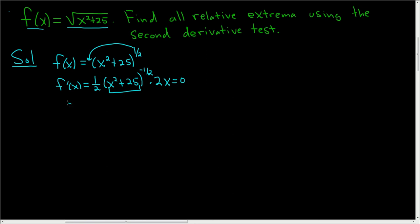This can be rewritten as follows. f prime of x is equal to, the twos cancel, the x will stay upstairs, and we can bring this guy downstairs and it becomes positive. So x over x squared plus 25 to the one-half, and we set this equal to zero. This is a fraction. There's no common factors, so we can automatically set the numerator equal to zero, and that's going to be our critical number.